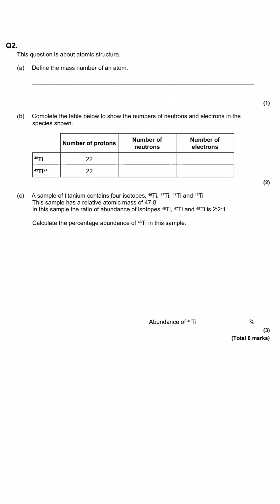This question is about atomic structure. Part A: define the mass number of an atom. Well, the mass number is defined as the number of protons added to the number of neutrons. These are the things you find in the nucleus of the atom, and they're the subatomic particles in the atom that have got the mass. The mass number is very literal because in chemistry, the mass of an electron is taken to be zero. So this is the number of things in the atom that have got mass.